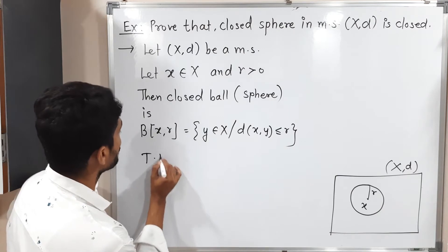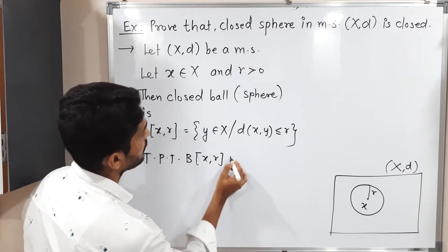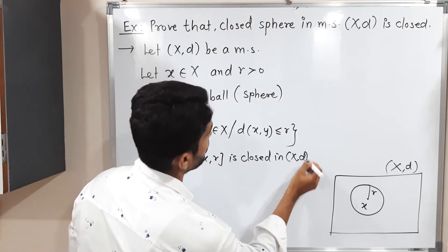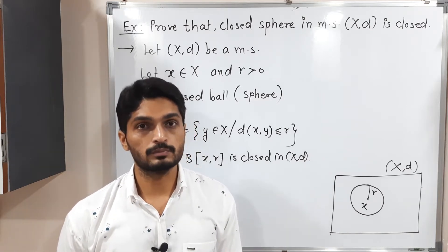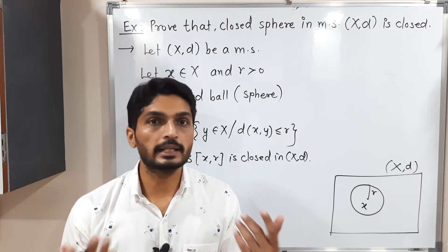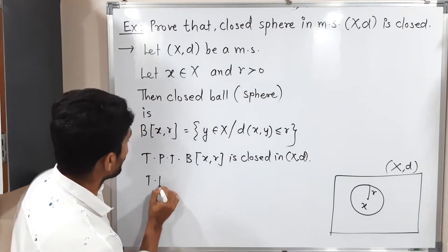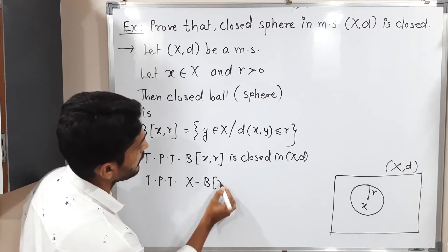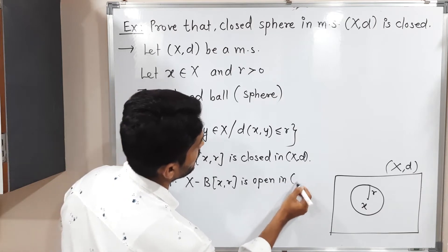We clearly mention: to prove that B(X, R) is closed in (X, d). The technique to prove any set is closed is simply to prove its complement is open — then we can declare it is a closed set. So our target is to prove that X minus B(X, R) is open in (X, d).